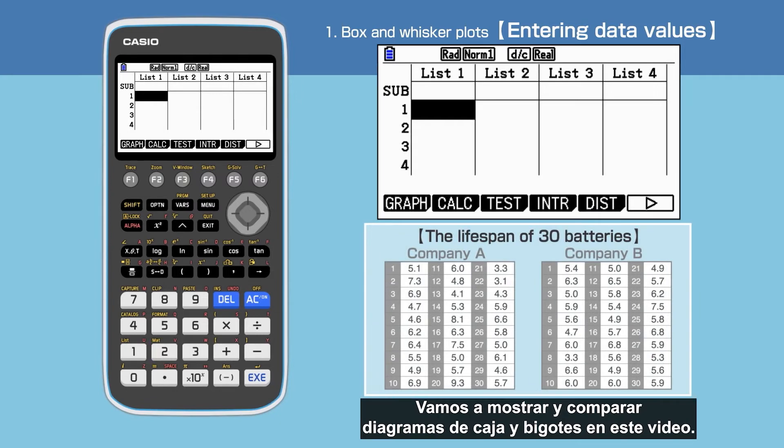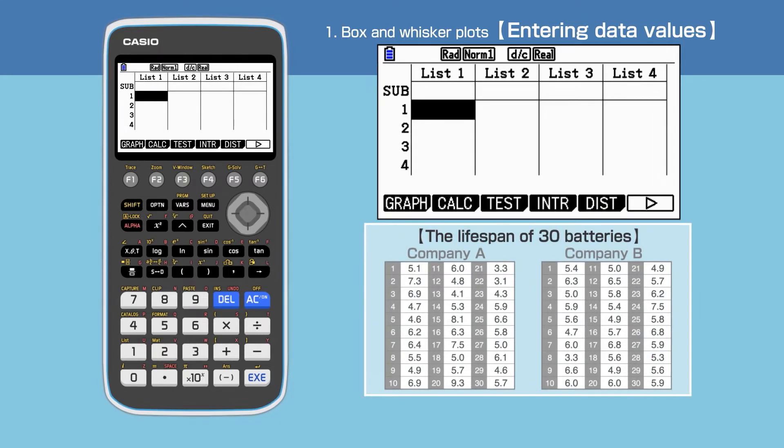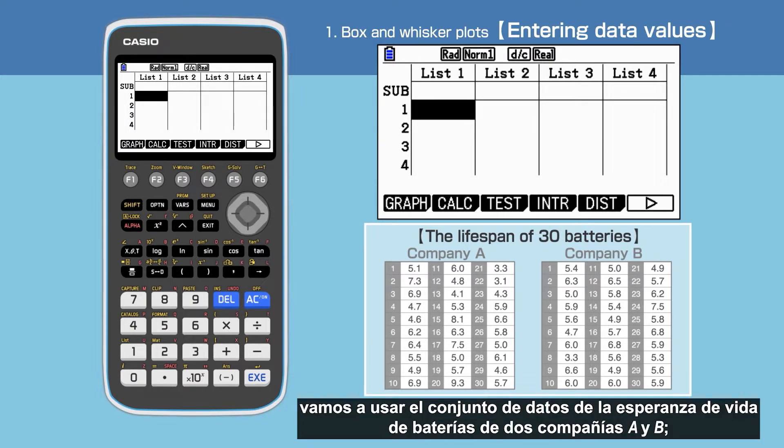We are going to display and compare box and whisker plots in this video. As example data, we will use the lifespan of batteries of two companies A and B.